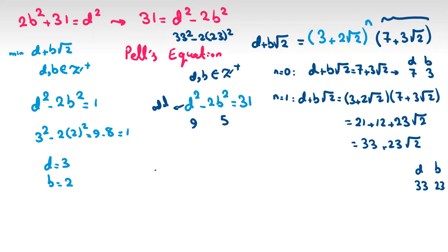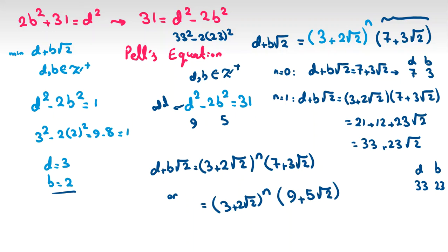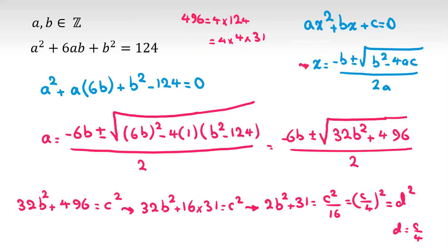And it will be the first one: d plus b root 2 equals 3 plus 2 root 2 to the n times 7 plus 3 root 2. The first one for n equals 0 is 9 plus 5 root 2 - oh sorry, sorry, the first one is for 1, which is 3 plus 2 root 2 to the n. So we have these two answers, and we found d and b. After we found d and b, you can find c, and after you find c you can find a.